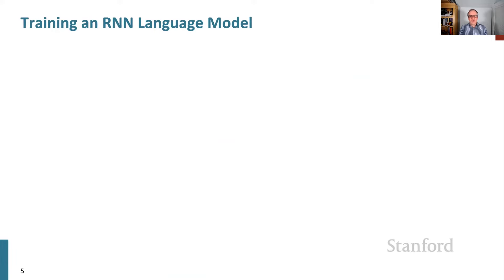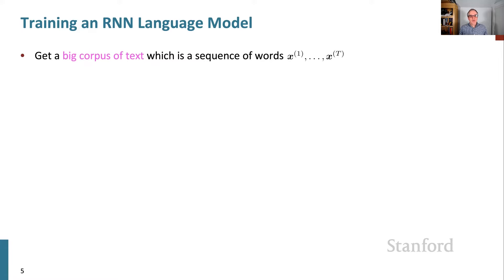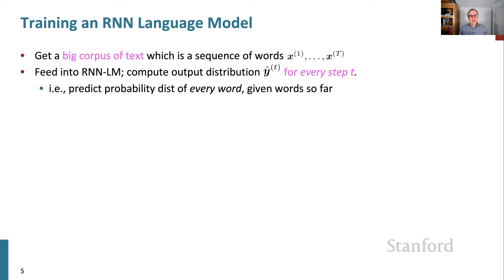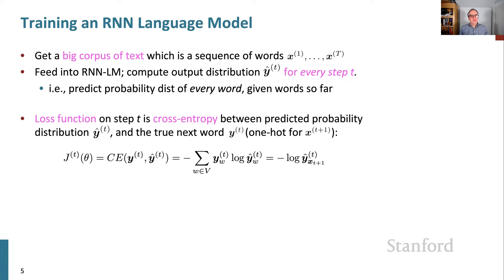I introduced that model, but I haven't gone through the specifics of how we train it, how we use it, and evaluate it. Here's how we train an RNN language model: we get a big corpus of text and regard that as a long sequence of words x1 to xT. We feed it into the RNN LM. For each position, we take prefixes of that sequence and, based on each prefix, predict the probability distribution for the word that comes next. The loss function we use is cross entropy loss — also known as negative log likelihood loss.